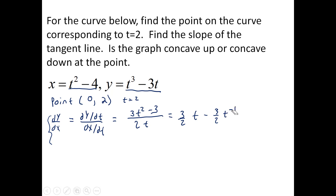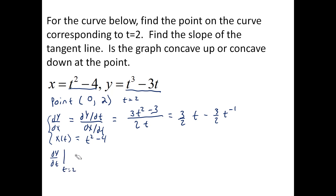We can write that as two separate fractions: three-halves t minus three-halves t to the negative one. The x of t is t squared minus four, associating each x value with a slope of a tangent line. We evaluate dy/dx at t equals two — we don't need the x coordinate separately. Plugging in two: 3t squared is 12, minus 3, giving 12 quarters minus 3 quarters equals nine-quarters. That's my slope of the tangent line.